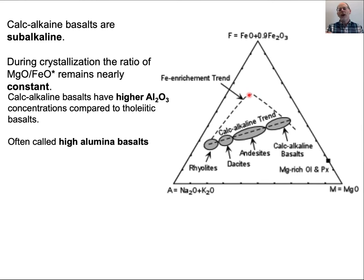We call this the calc-alkaline trend. It's called calc-alkaline — I'm not entirely sure why — because it has a calcium-aluminum, sodium-potassium trend. These magmas do start out with higher aluminum contents, and so they're sometimes called high-alumina basalts.